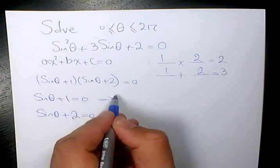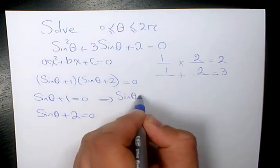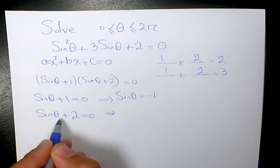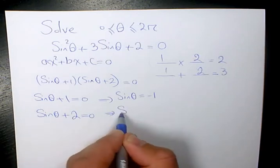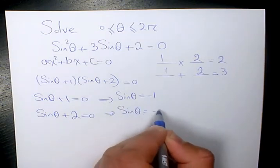Sine theta plus 1 equals to 0, it results in sine theta equals to negative 1. And sine theta plus 2 equals to 0 results in sine theta equals to negative 2.